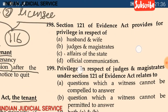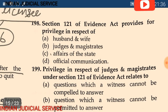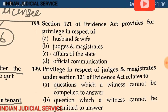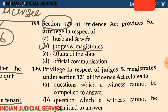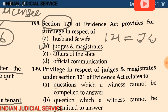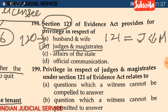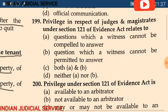Question 198: Section 121 of the Evidence Act provides for privilege in respect of — (A) husband and wife, (B) judge and magistrate, (C) affairs of state, (D) official communication. The answer is: judge and magistrate. Section 121 belongs to judge and magistrate, while section 120 belongs to husband and wife.